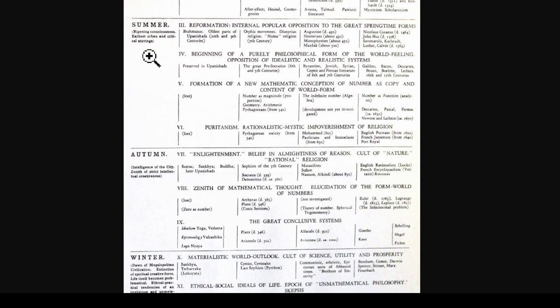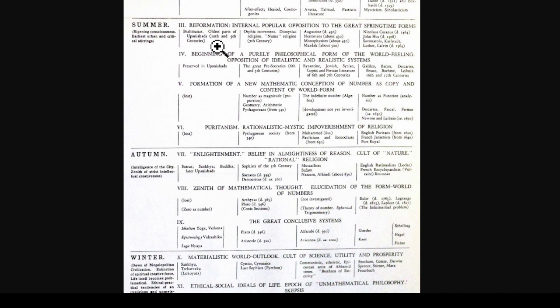Then the summer period: ripening consciousness, earliest urban and critical stirrings. In India we get the Brahmanas and the oldest parts of the Upanishads, ushering in the philosophical phase — moving from Brahmin priests pouring melted butter into fire altars and singing mantras, to thinking philosophically about the implications of these ideas. Yajnavalkya appears in the oldest Upanishads — the Chandogya and Brihadaranyaka — introducing yoga, probably a holdover from the earlier Harappan/Dravidian Indus Valley society, which dates back to 2600 BC and lasts about a thousand years.